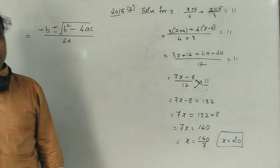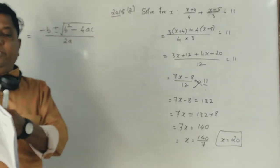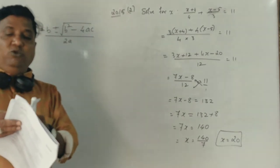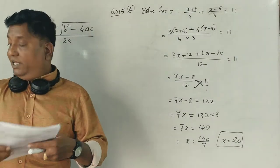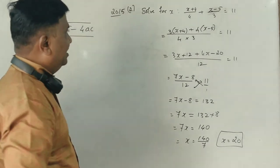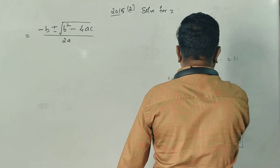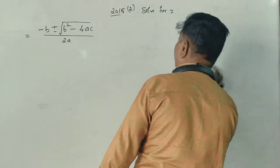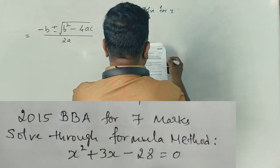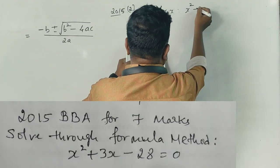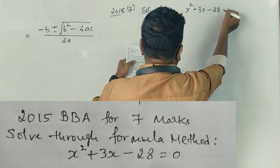Now, it is the 2015 paper. In 2015, there is one question to be solved through the formula method. The equation is: x squared plus 3x minus 28 is equal to 0.